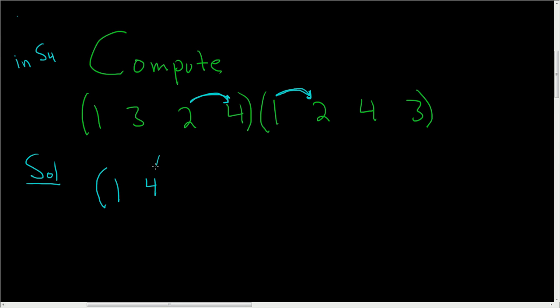Now you ask yourself, where does 4 go? Well, 4 goes to 3, but then 3 goes to 2, so 4 goes to 2. Again, 4 goes to 3, but then 3 goes to 2, so 4 goes to 2.